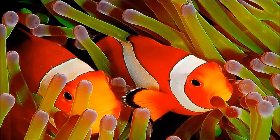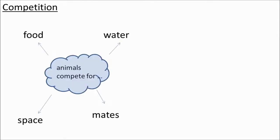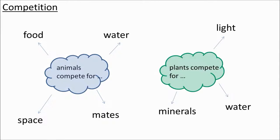So we're talking about relationships between organisms. Let's look at competition. What do animals compete for? They compete for food, water, space, and mates. What do plants compete for? Light, water, and nutrients.